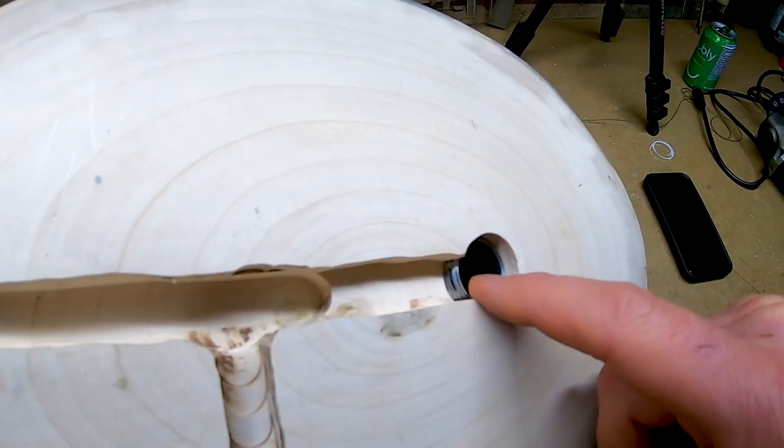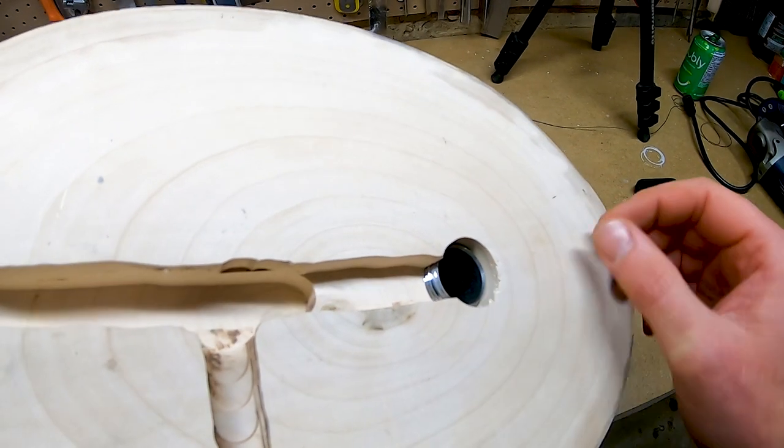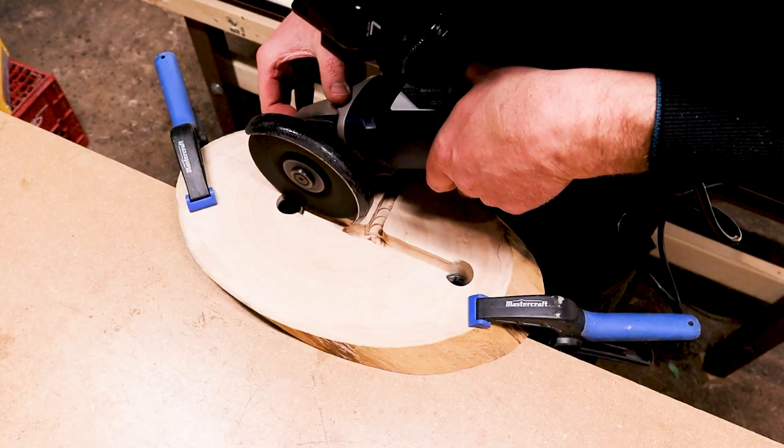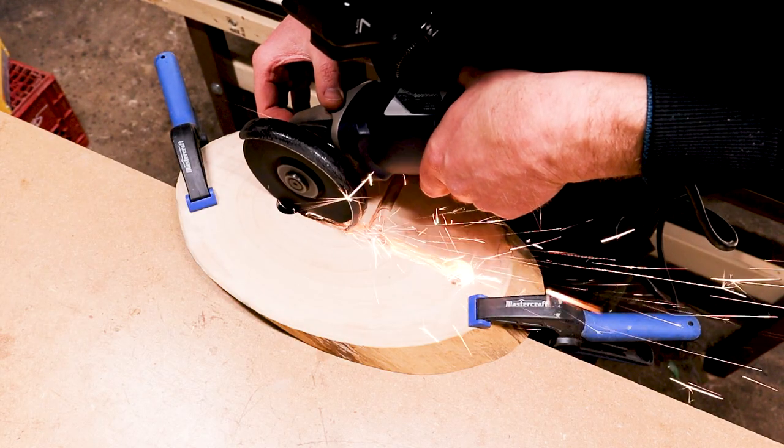You can see here how the nipple has protruded above the bottom of the channel. This is why having a thicker base would have been a bit more convenient. To fix this, I grinded off the obstruction with an angle grinder and used a file to remove any sharp edges.